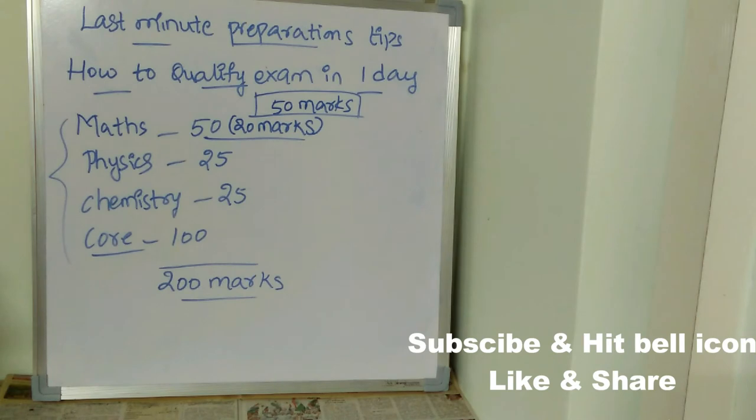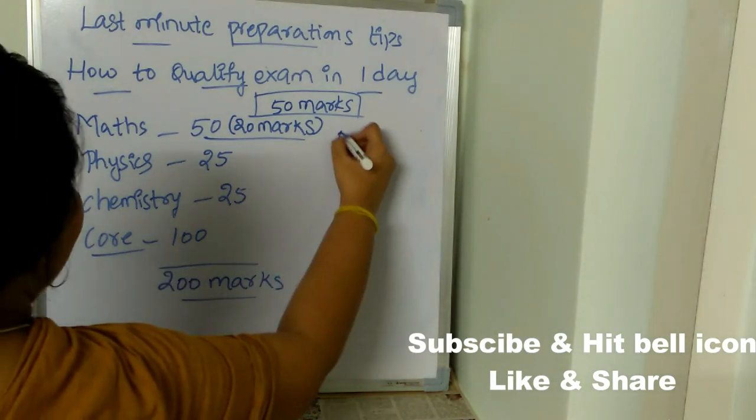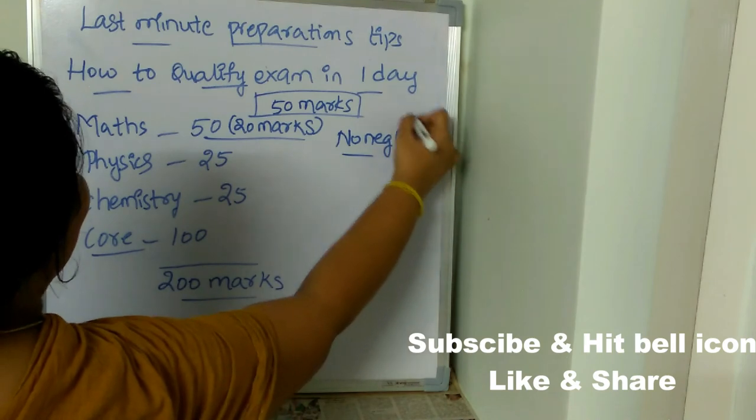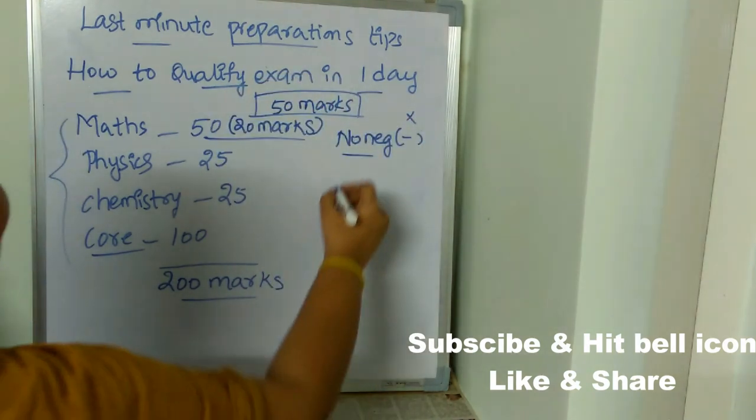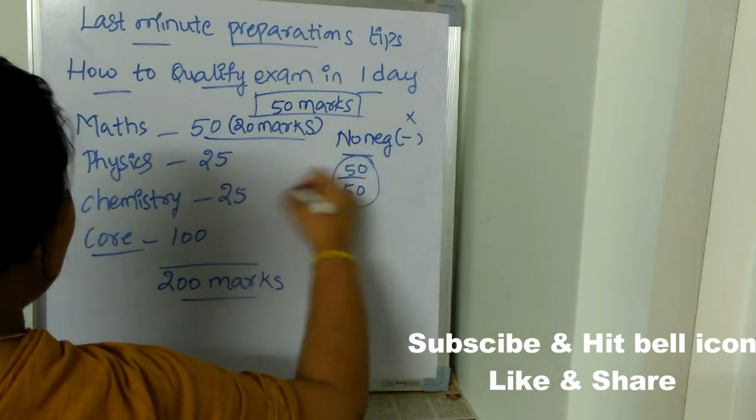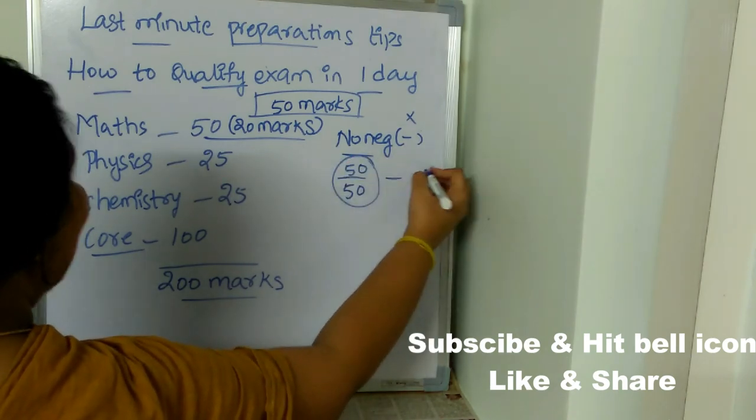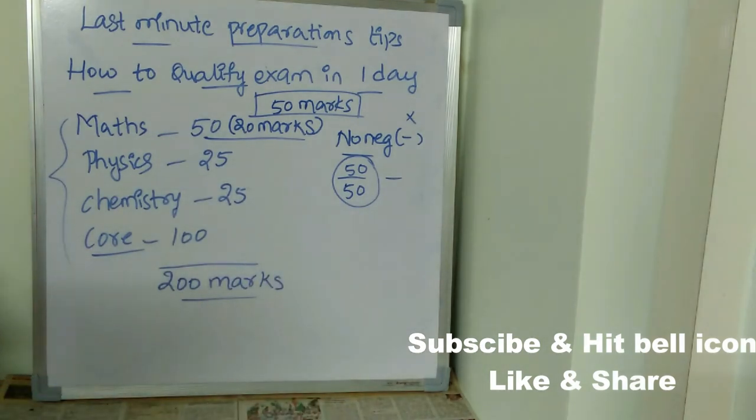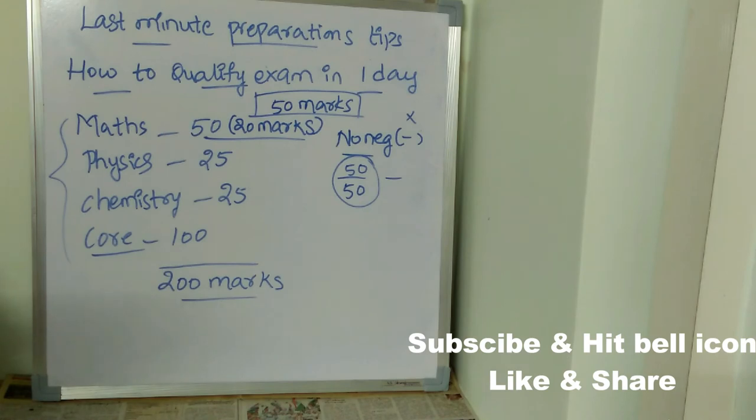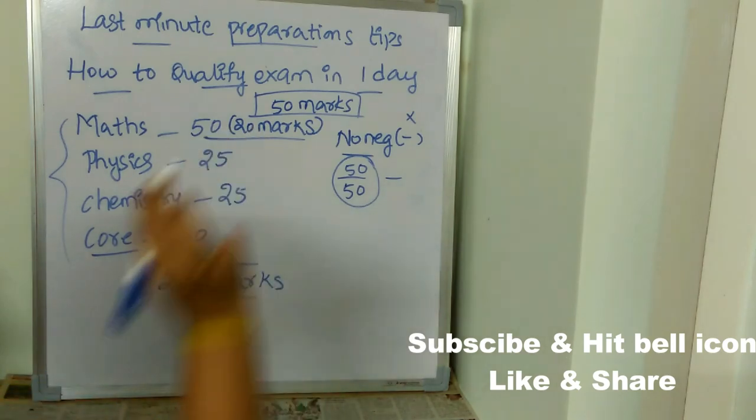Why I am assuring you to take 20 marks as the least case is first thing is there is no negative marking. We all know there is no negative marking in the ESET. So out of 50 questions, if you attempt all the 50 questions, you're still not going to have any negative marking. You can attempt 50 questions. In those 50, I'm sure you're going to get at least 20 marks in the worst case.